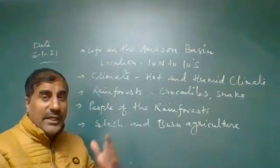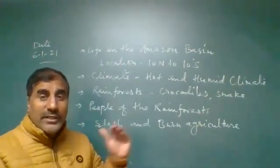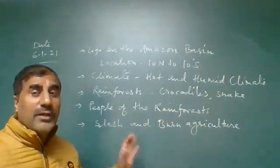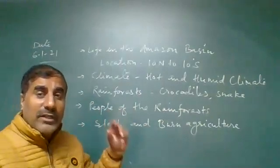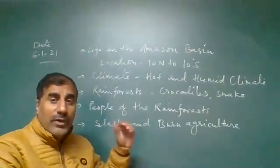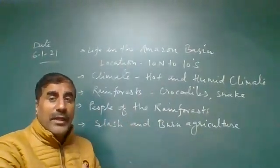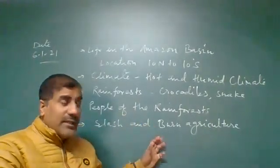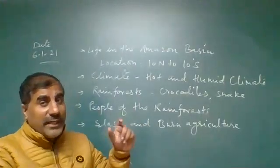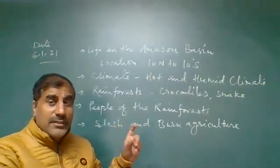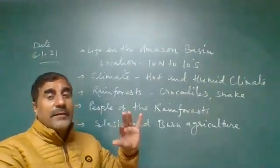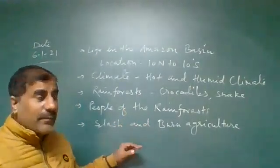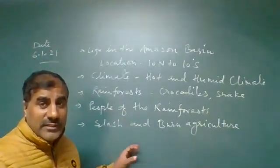If there is hot climate and heavy rainfall, what type of vegetation will be found? Evergreen vegetation is found in areas that receive heavy rainfall. The equatorial area receives heavy rainfall, so evergreen forest is found there. Earlier in chapter 6, we discussed different types of vegetation.